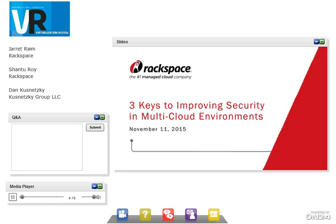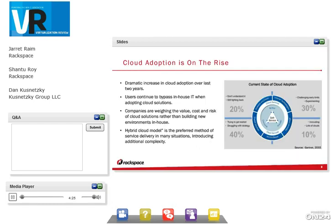Jared begins the presentation by discussing what Rackspace is seeing in the cloud space. There's an increase in cloud adoption driven by many different factors — some companies are trying to get value out of the scalability of public cloud, some are still moving to virtualization, and some are combining different platforms to solve problems. Looking at adoption data, customers are widely spread between those having a lot of success with the cloud and those still experimenting.